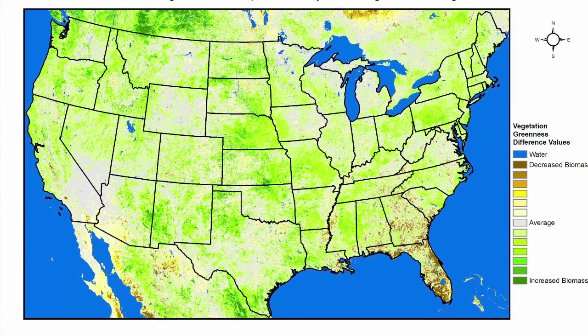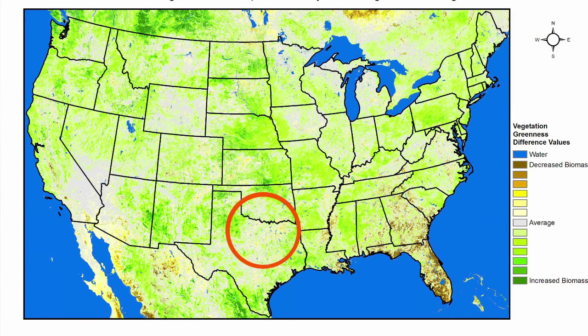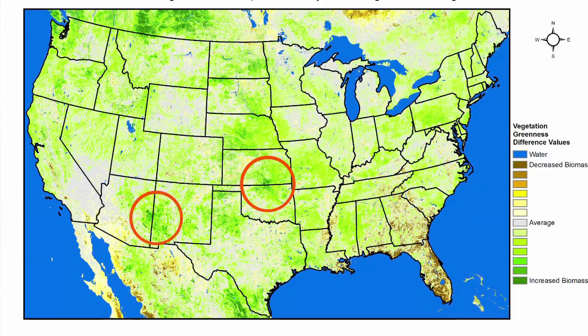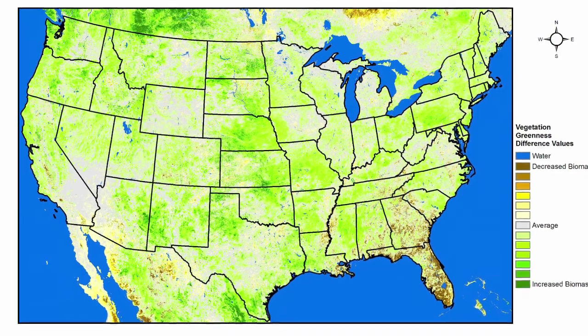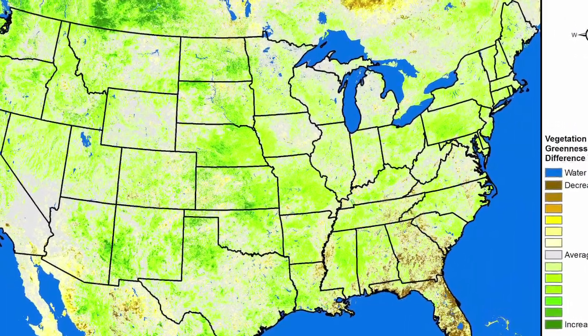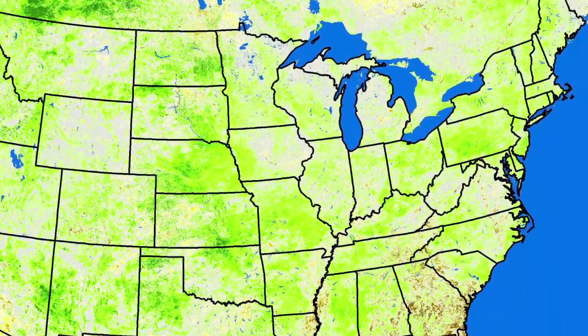Obviously we have the desert, but what you're seeing here is that areas that are kind of white are about normal, areas that are brown are decreased — they're browner than normal and not as green — and areas that are green are greener than normal. Most of the U.S. is greener than it normally is this year.